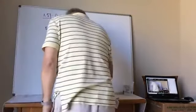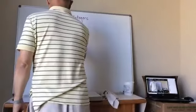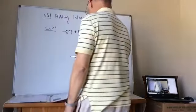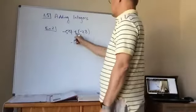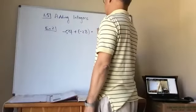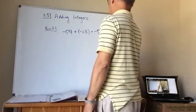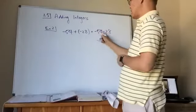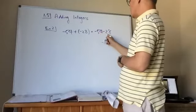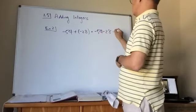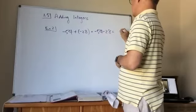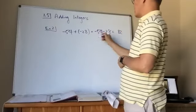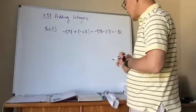Example 2a: Find the sum of negative 54 plus negative 28. They have the same sign, so I add 54 plus 28 to get 82, and since the common sign is negative, the answer is negative 82.